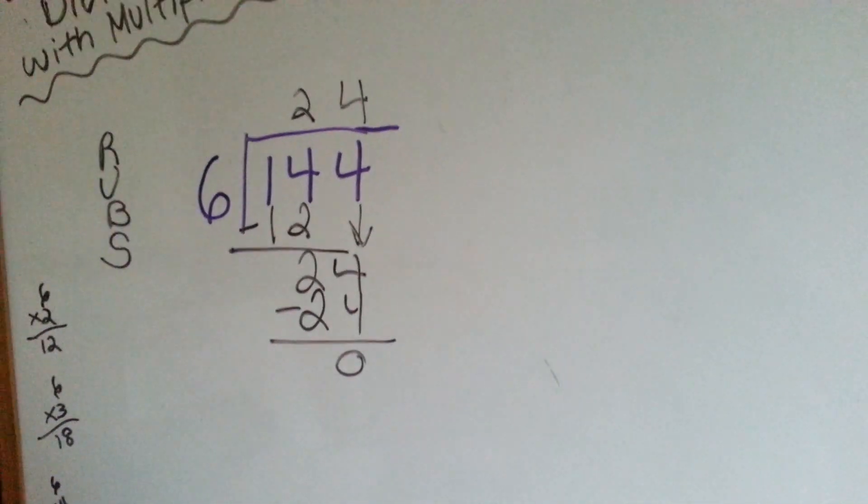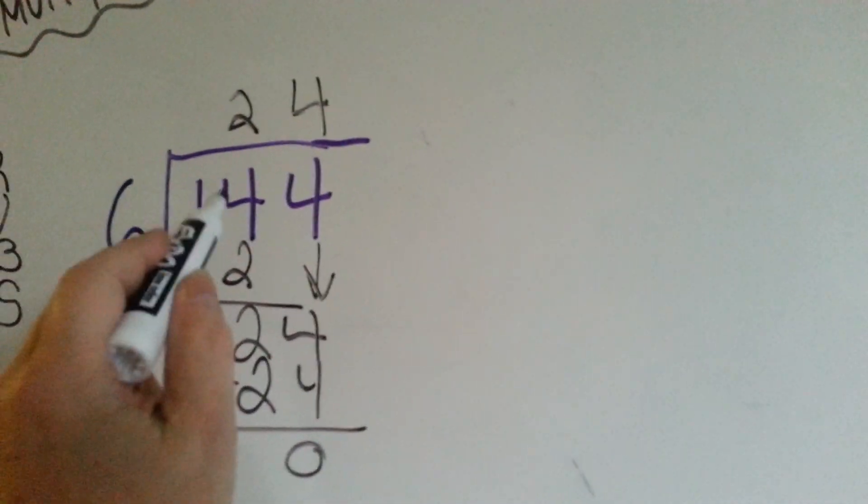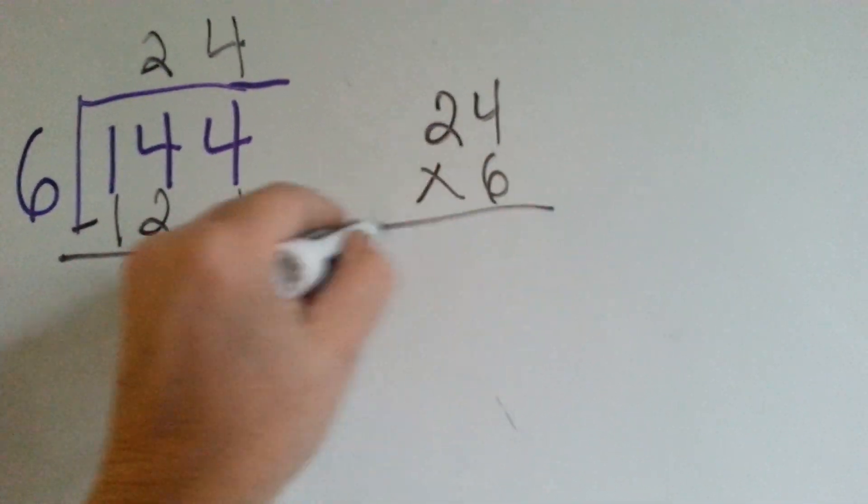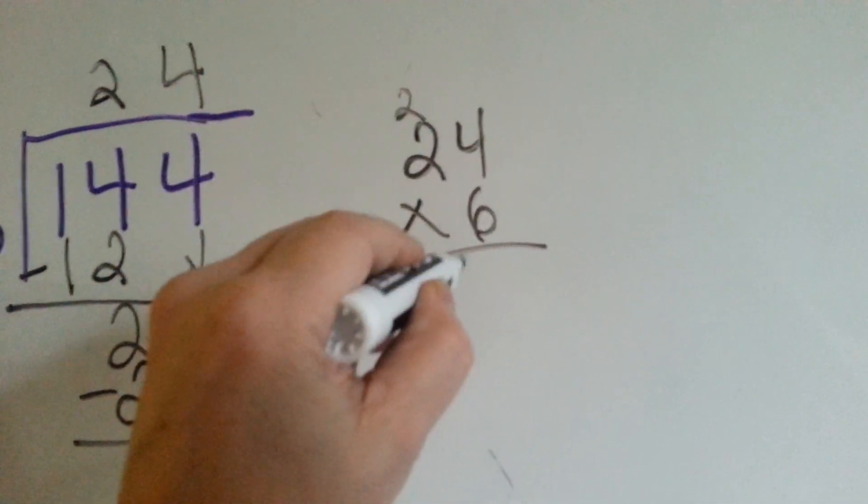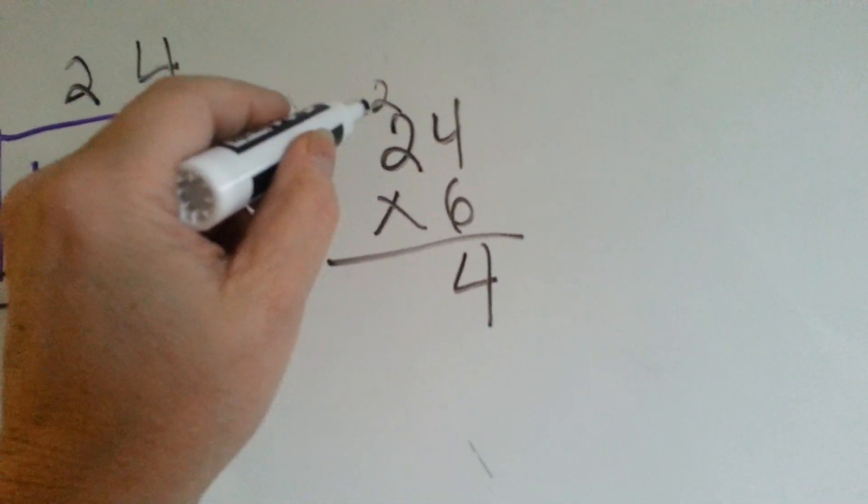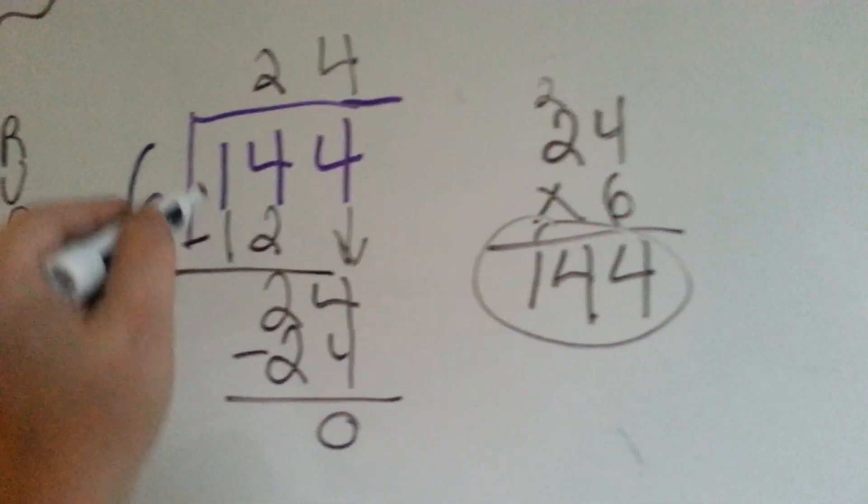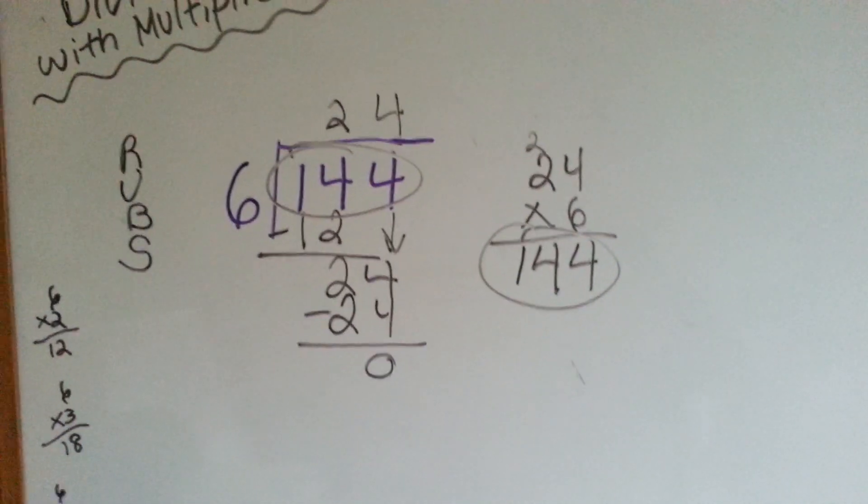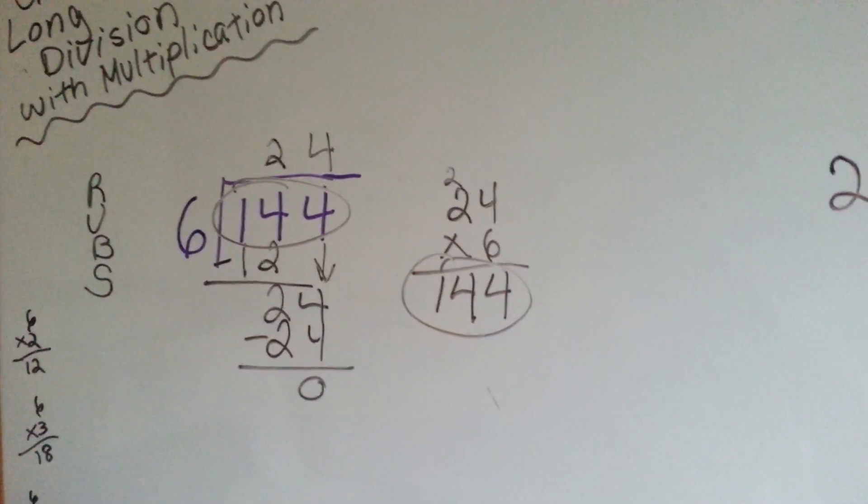Now, to check it, what we do is we multiply 6 times 24. And if it comes out to be this number, then we did it right. Here's our 24 times 6. 6 times 4 is 24. We carry the 2 and put the 4 down. 6 times 2 is 12, plus the 2 we carried over is 14. And we get 144, which is the same as the 144 here, and that means that 24 is the correct answer. We've checked it and we've proved that it is the correct answer.